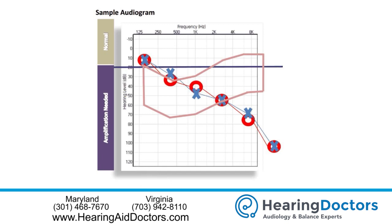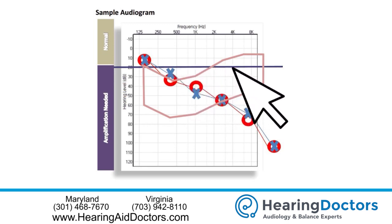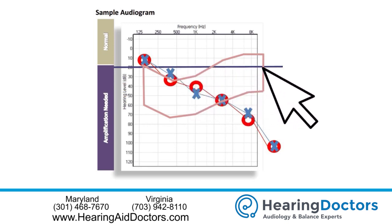The responses for both ears are recorded on the audiogram. Red circles represent the right ear's responses and the blue X's are used for the left ear. The symbols above the 20 decibel line represent normal hearing sensitivity and below are abnormal responses, which are then classified as mild, moderate, severe, or profound degrees of hearing loss.